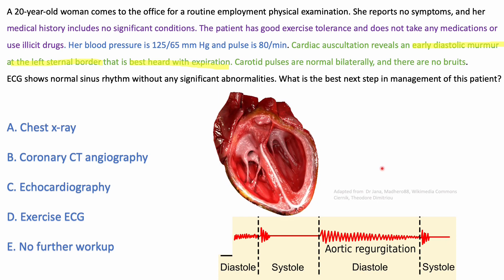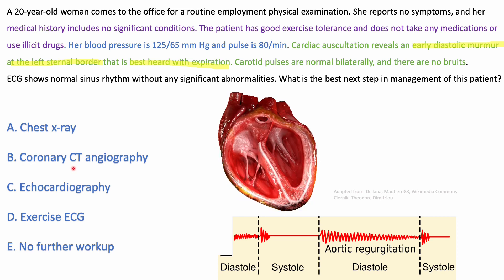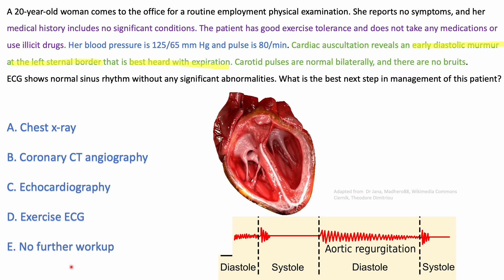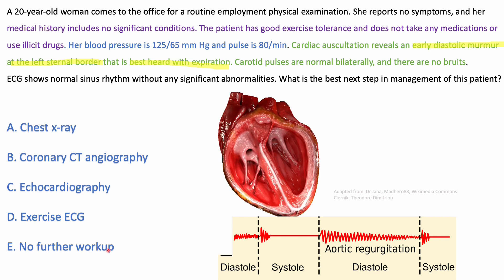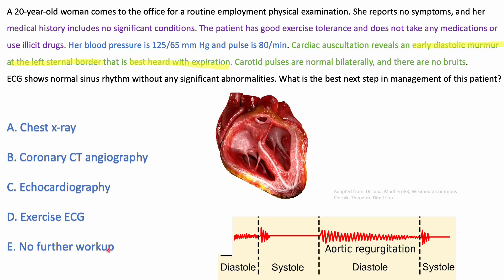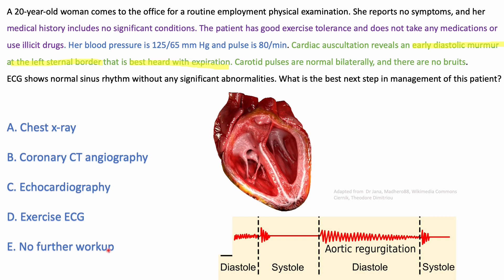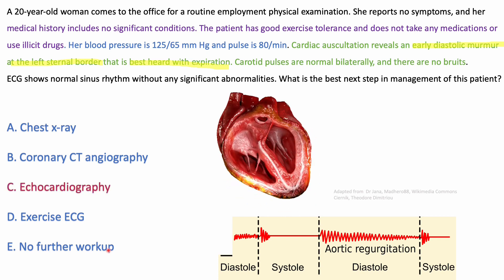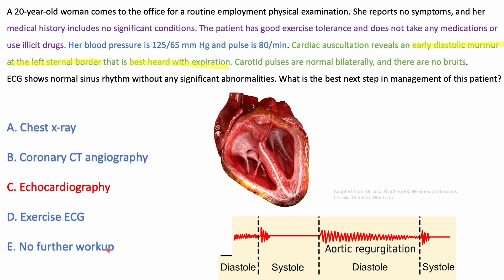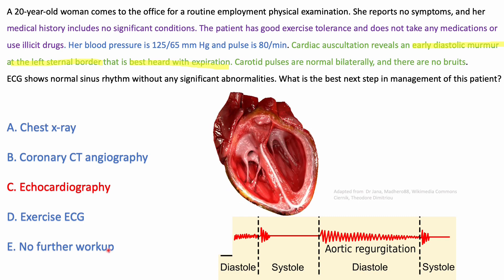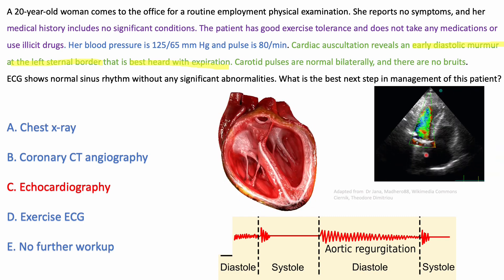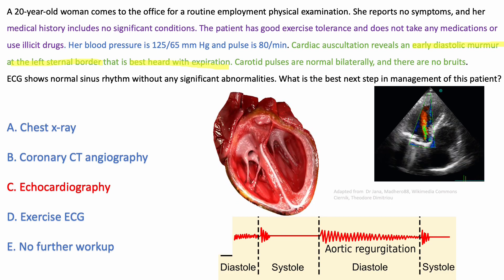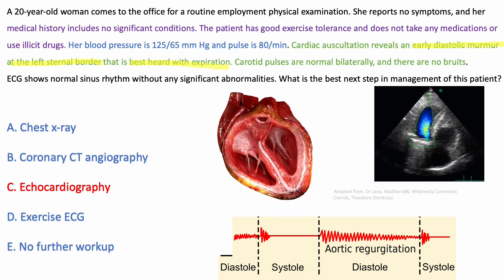So in someone who has a murmur of aortic regurgitation and no other problems or symptoms, should we dismiss it or do something? In a valvular disorder of the heart, we have to do an echocardiography — that would be the correct answer. It will show reversed flow throughout diastole, when the valve should be closed during diastole.